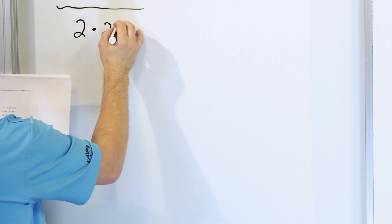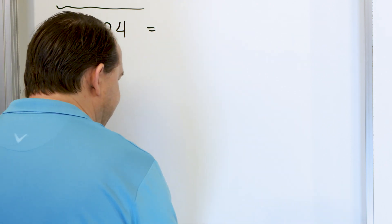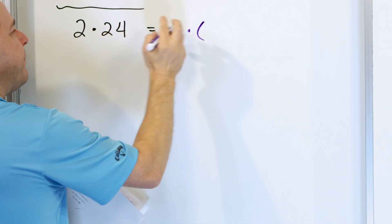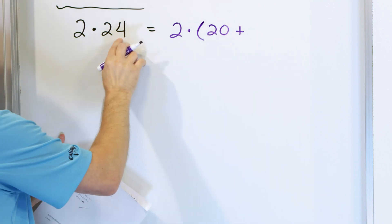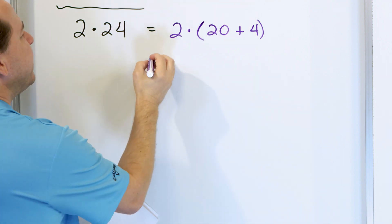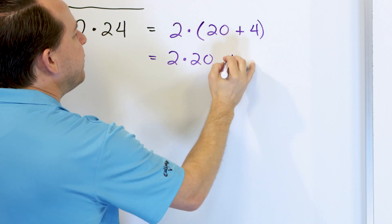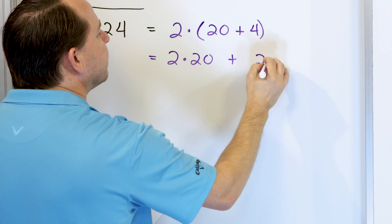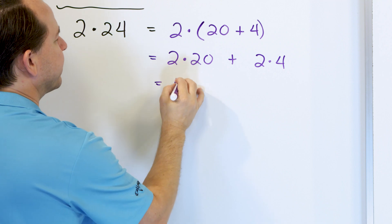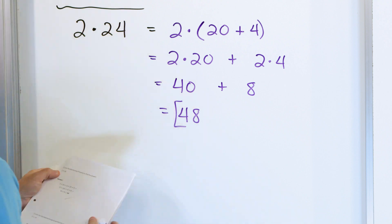Let's say we have 2 times 24. Most people do not know what 2 times 24 is. But in your mind, I don't want you to think about it as 2 times 24. I want you to think about it as: the 2 in 24 really represents a 20, and it's really added to the 4. So really it's 2 times this right here. From distribution, the 2 times the 20 is what we do first, then the plus sign comes from the inside, and then 2 times 4. So 2 times 20 is 40, plus 8, and you have 48. The answer is 48.